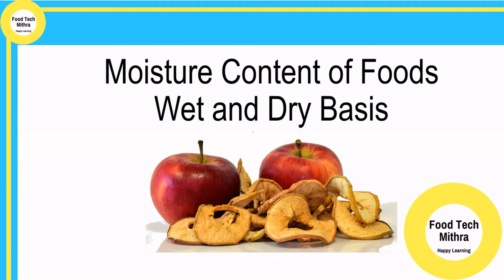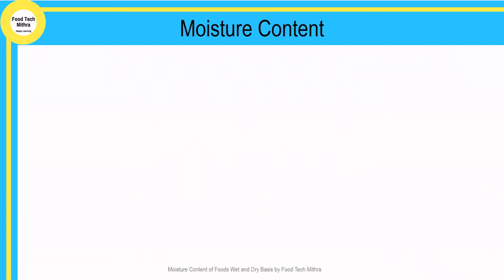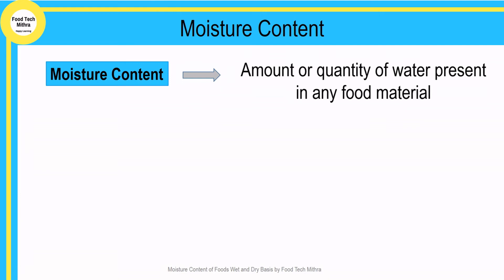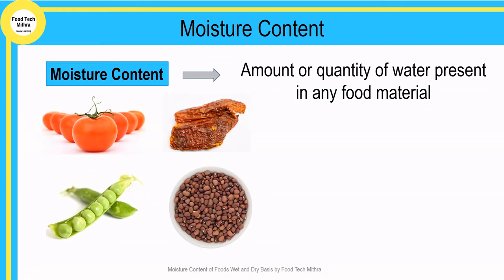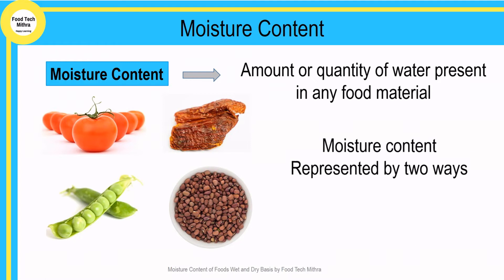Welcome to Food Tech Mitra. In today's video we are going to discuss moisture content in wet and dry basis. Moisture content is the amount or quantity of water present in any food material. You can very well distinguish between a fresh tomato and a dry tomato, similarly green peas and other dried products. It is the moisture content that makes the vast difference in both products.